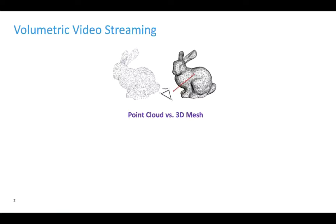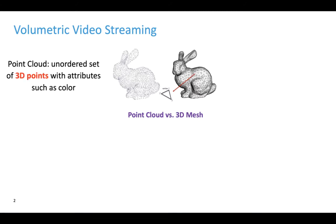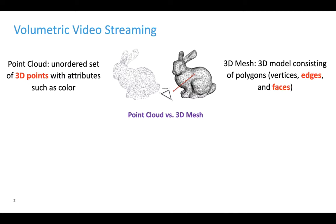The emerging volumetric video captures a 3D space. In a volumetric video, each frame could be a point cloud or a 3D mesh. A point cloud is simply an unsorted set of 3D points with color information. A mesh has not only points but also edges and faces. We focus on point cloud mainly because it's simple and flexible. We can extend our proposed key concept to mesh-based volumetric video streaming as well.